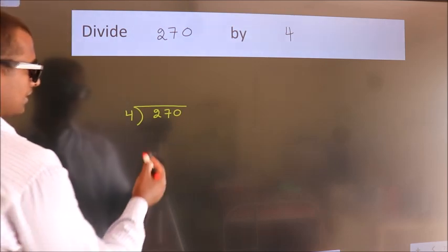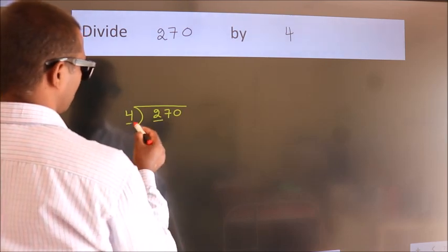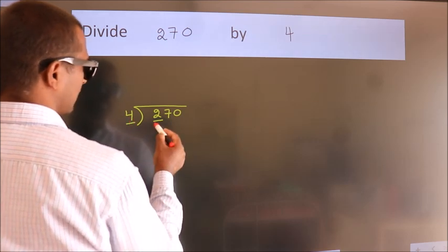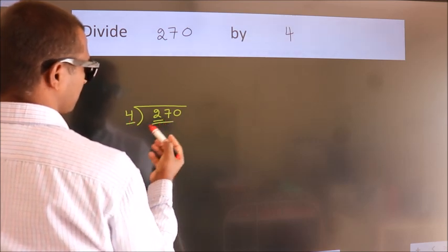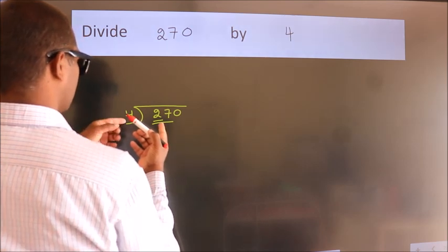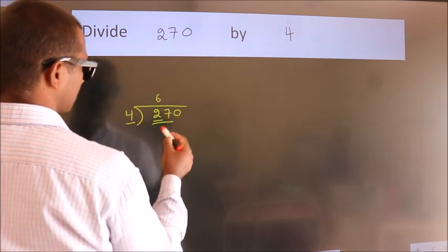Next. Here we have 2, here 4. 2 is smaller than 4, so we should take 2 numbers: 27. A number close to 27 in the 4 table is 4 times 6, which is 24.